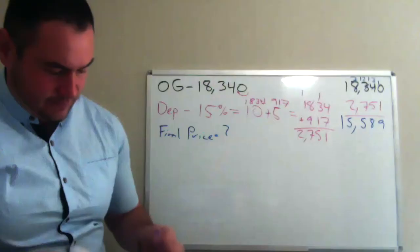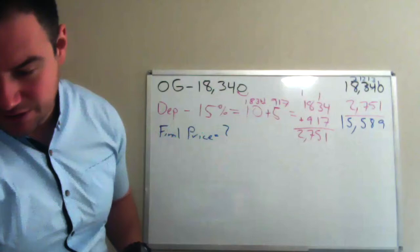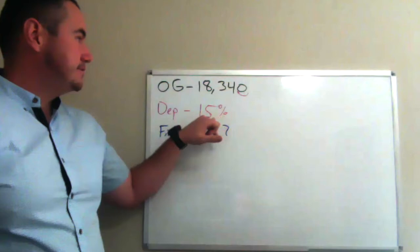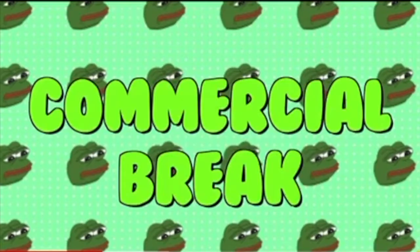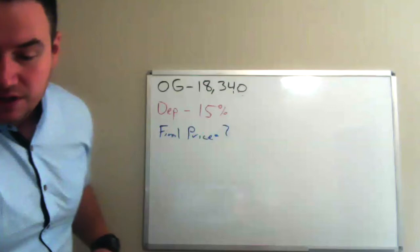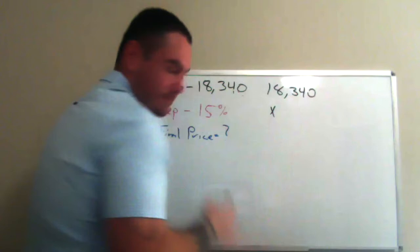Now, let's go ahead and just pump the brakes a little bit, and make things a little bit easier. The strict mathematical way to do this is you find what 15% of the original price is, and then you subtract it and get the answer. Let's start with 18,340 times it by 0.15.